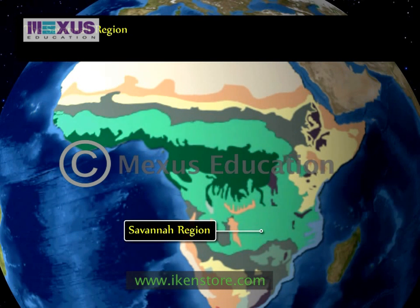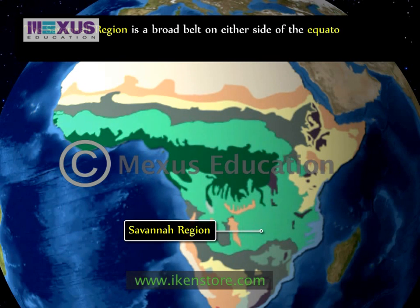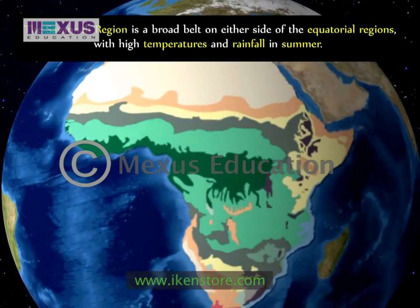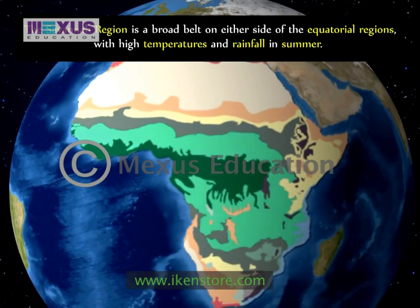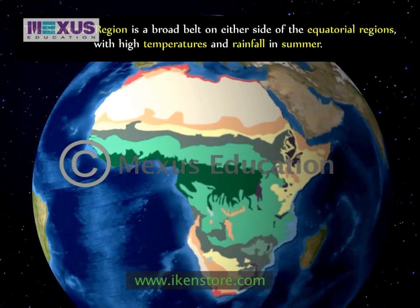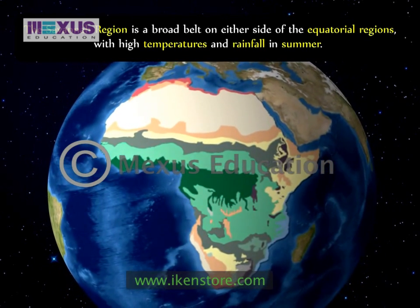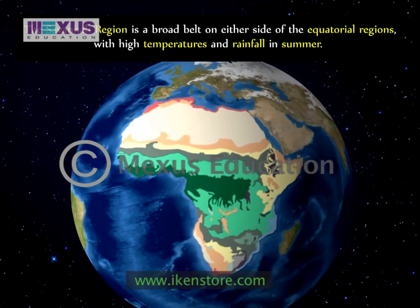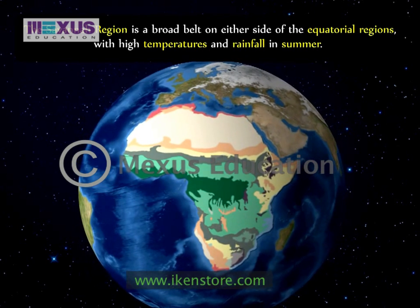The savannah region, also known as the Sudan type, is found in the broad belt on either side of the equatorial regions, with high temperatures and rainfall in summer. Temperatures are lower in the eastern highlands than in the lowlands, and there is more rainfall on the eastern coast as it faces the moisture-laden trade winds blowing from the Indian Ocean.